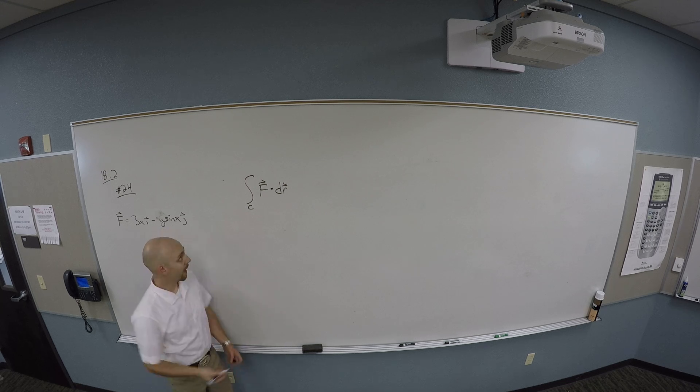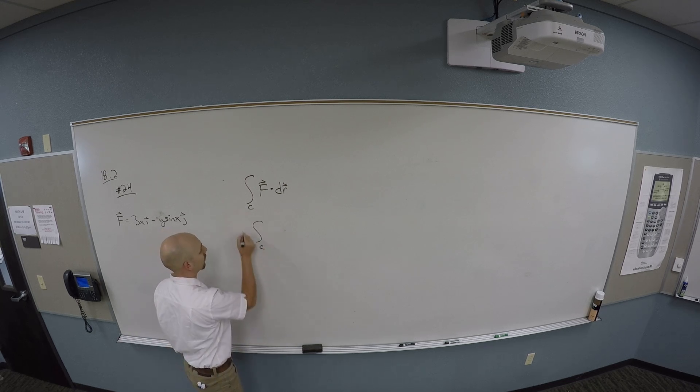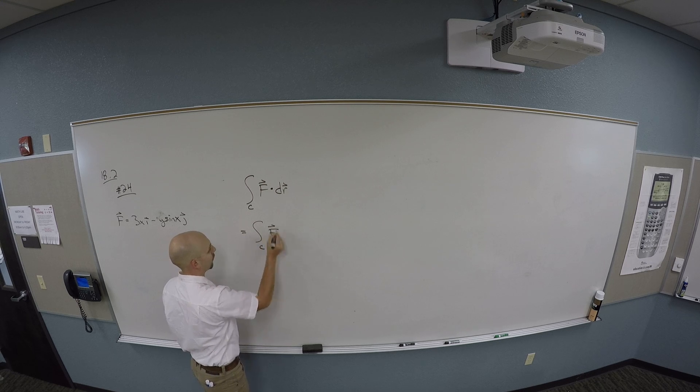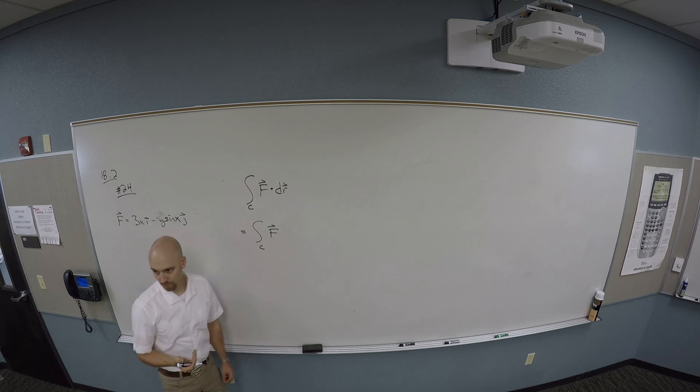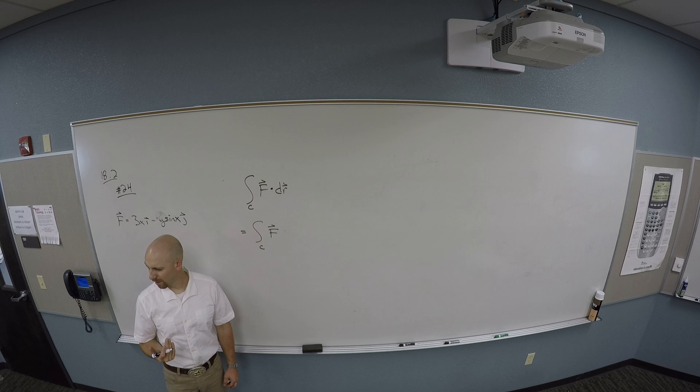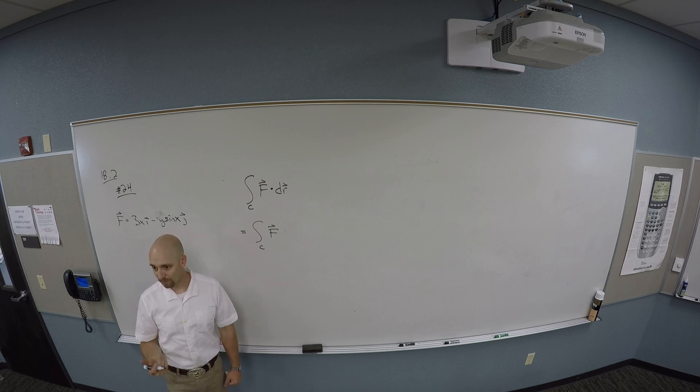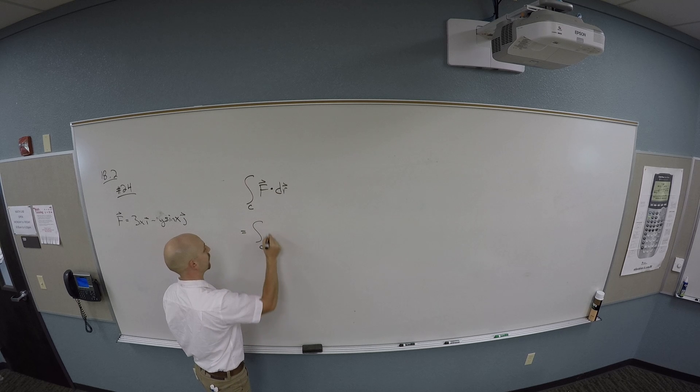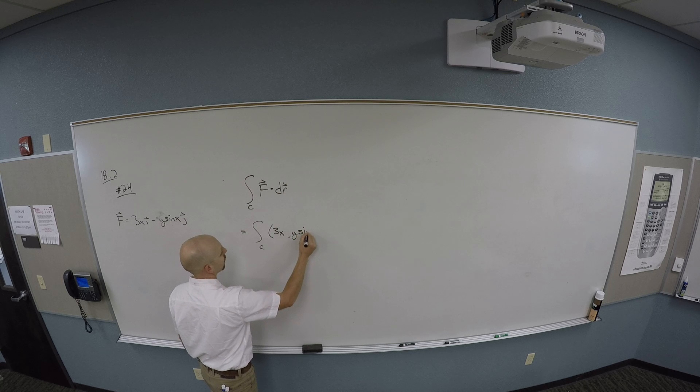Okay, I'm going to take and do f. But I know f, right? I've got some stuff for f. So let me think about f as 3x comma minus y sine x.